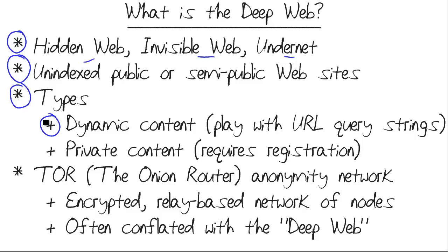For instance, dynamic content. We have static websites that consist of plain garden-variety XHTML or HTML pages whose content is hard-coded. But more and more now, we have dynamic websites that are driven by a database, so those pages are dynamically created. We can play with URL query strings to get pages that may not be intended for public consumption, and because of their dynamic nature, aren't picked up by search engines.